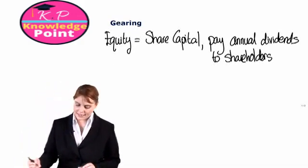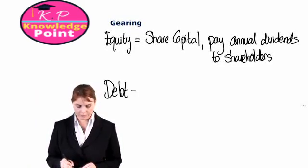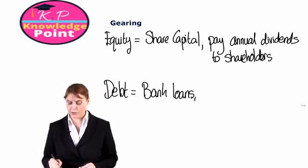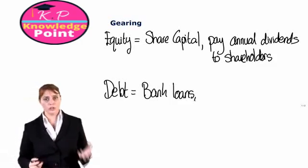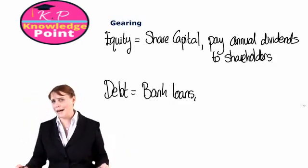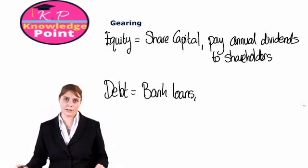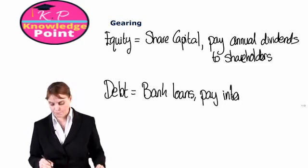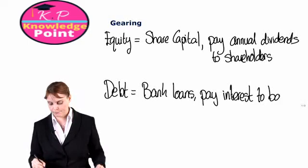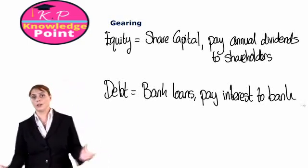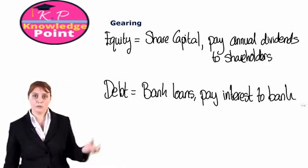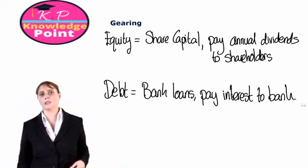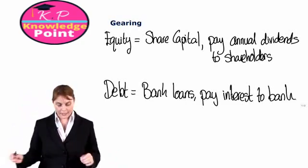Another type of financing we can have is debt financing. This is, for example, bank loans. The bank gives us a large sum of money to invest in our business, but in return we are going to have to pay interest to the bank. So they might lend us £100,000 at an interest rate of 5%. The interest is what the bank is earning on providing us that loan.